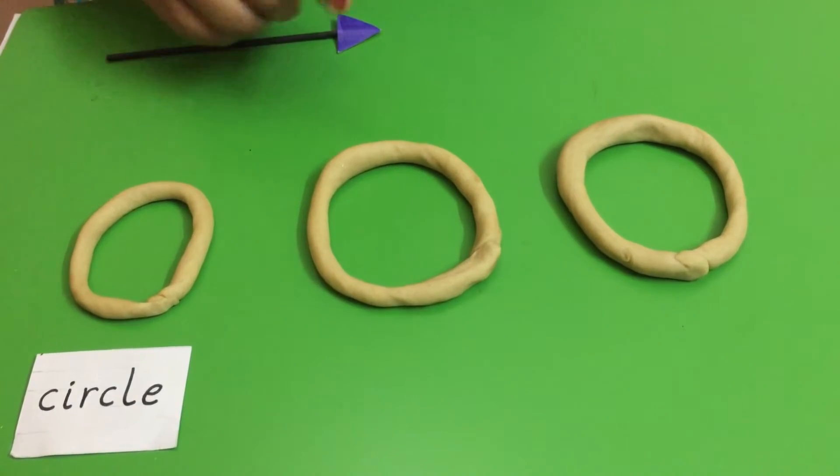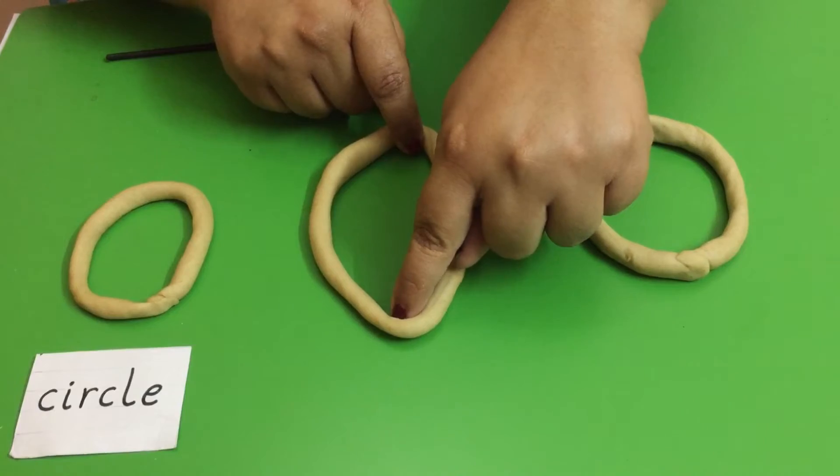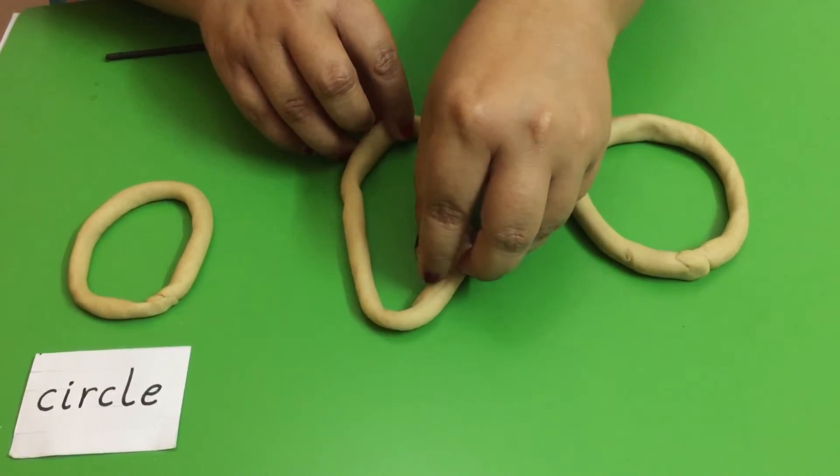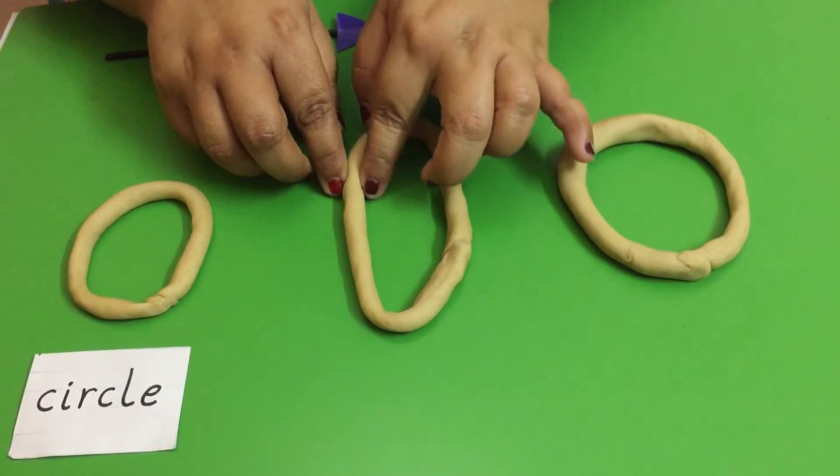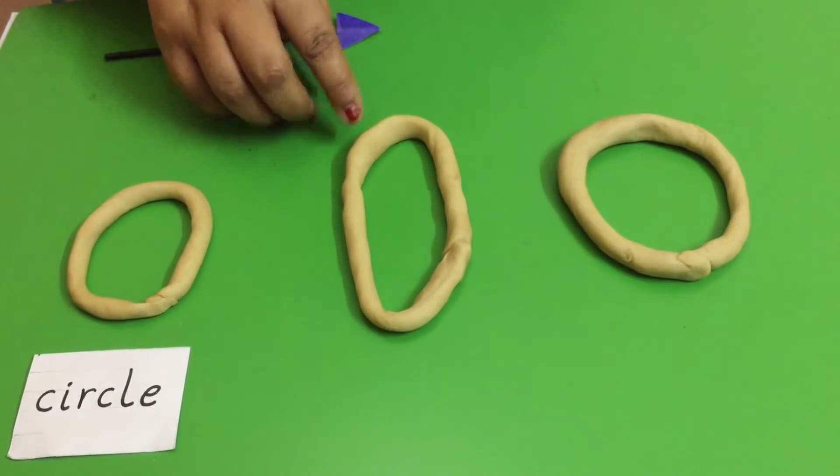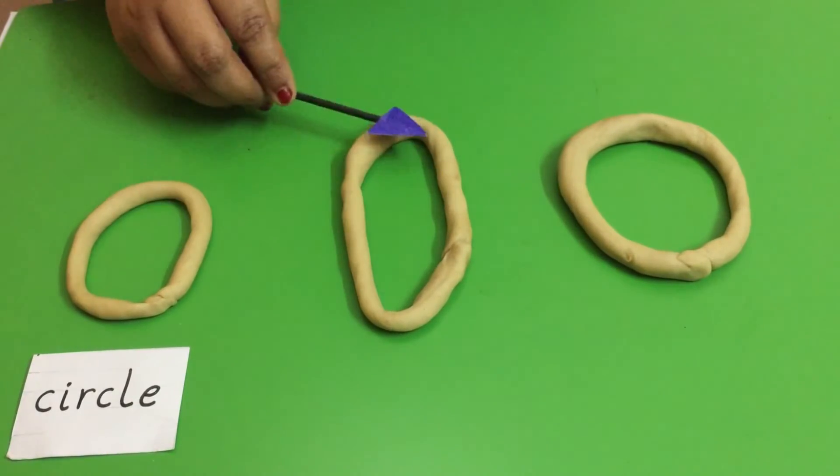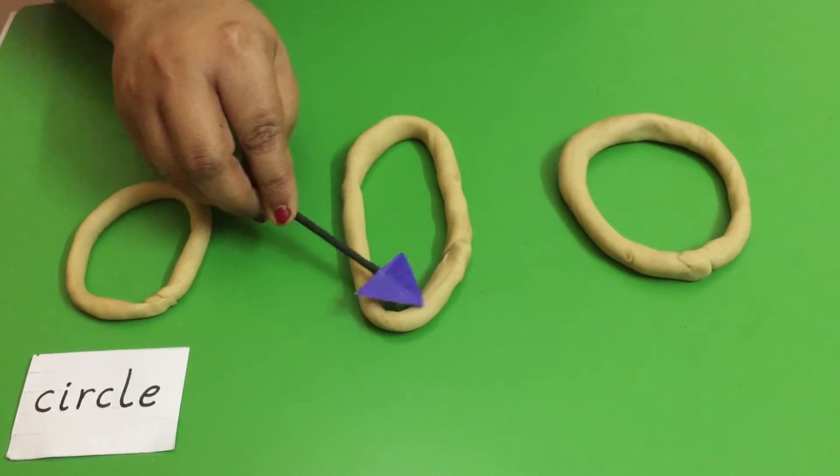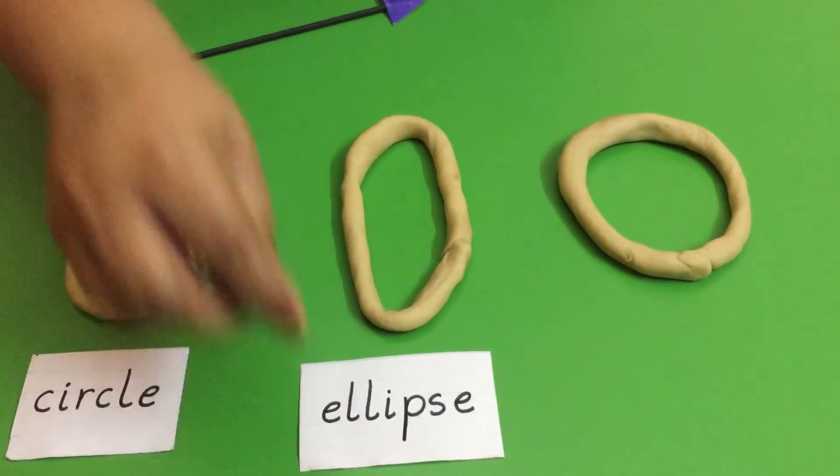The second circle I am going to use my two pointer fingers and stretch. Elongated means stretching. Now this is in shape of an ellipse. It has two narrow curved ends. The word ellipse looks like this.